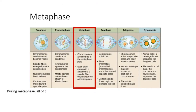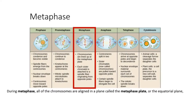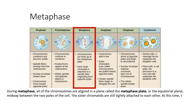During metaphase, all of the chromosomes are aligned in a plane called the metaphase plate, or the equatorial plane, midway between the two poles of the cell. The sister chromatids are still tightly attached to each other. At this time, the chromosomes are maximally condensed.